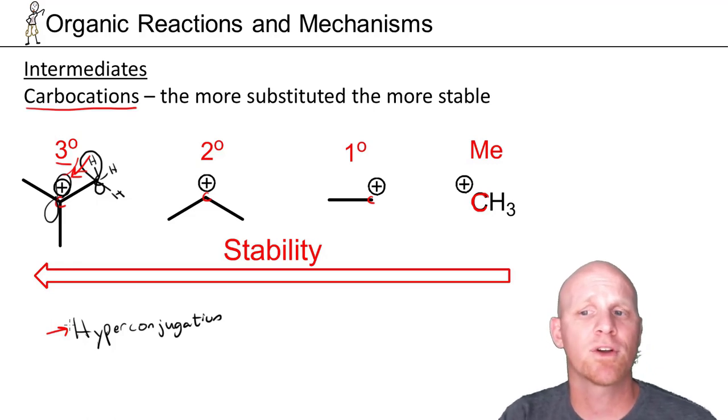The key buzzword here is hyperconjugation. If you're asked why is a tertiary carbocation more stable than a secondary carbocation, hyperconjugation is the answer.